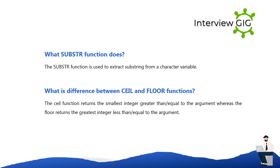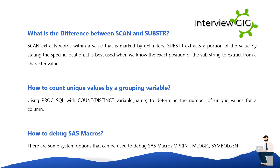What is the difference between CEIL and FLOOR functions? The CEIL function returns the smallest integer greater than or equal to the argument, whereas the FLOOR function returns the greatest integer less than or equal to the argument. What is the difference between SCAN and SUBSTR? SCAN extracts words within a value that is marked by delimiters. SUBSTR extracts a portion of the value by stating the specific location — it is best used when we know the exact position of the substring to extract.